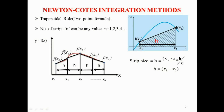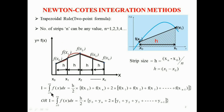Here, xn is the upper limit and x0 is the lower limit. The strip size h can also be calculated using h = x1 − x0 or x2 − x1. For n number of strips, the trapezoidal rule formula is: I = (h/2) × [f(x0) + f(xn) + 2 × (summation of remaining terms f(x1) + f(x2) + f(x3) + … + f(xn−1))]. Here, f(x0) and f(xn) are the first and last terms.